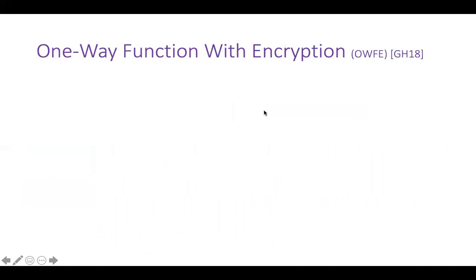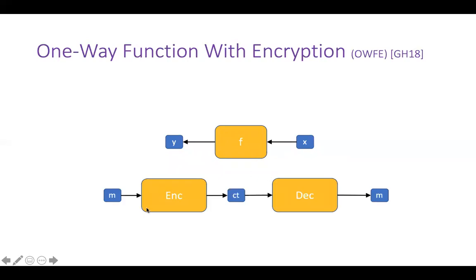Now let's see what one-way function with encryption actually is. As the name says, there is a one-way function component: a function f that takes input x and outputs a value y. There is also an encryption component — an encryptor that encrypts messages and a decryptor that decrypts the ciphertext. The keys come from the one-way function: y acts as the encryption key and x acts as the decryption key. Correctness says that if x is a preimage of y, then decryption works.